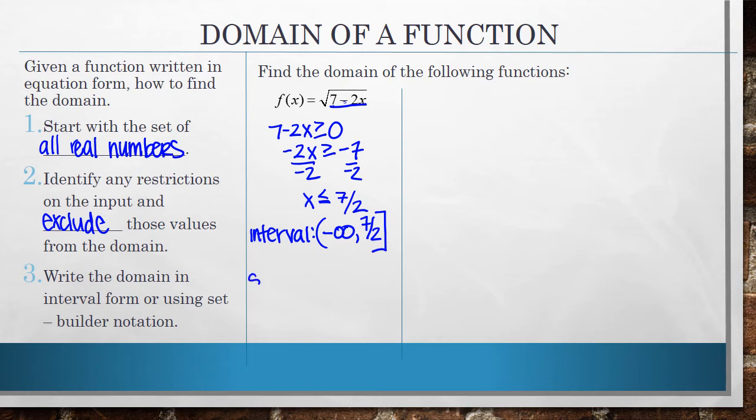Now, if I were to write this in set builder notation, this would be the set of all x values such that x is less than or equal to 7 halves. Next example. So here I have a rational function, and that's where I have it written as a fraction.